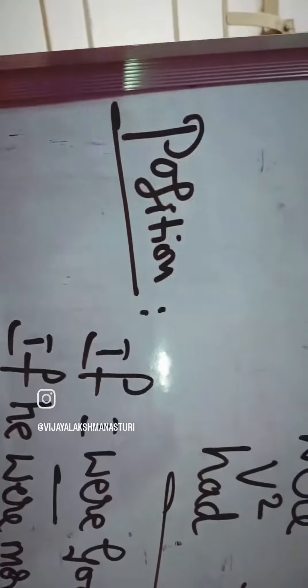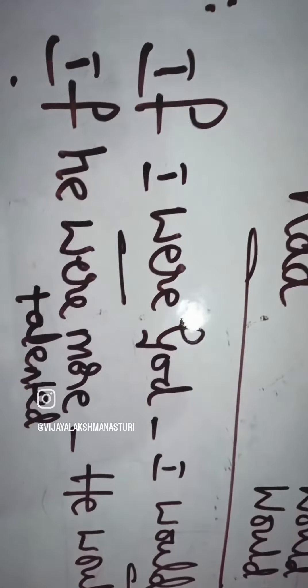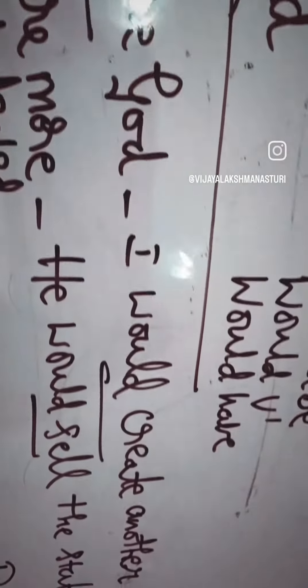Here are three themes. One is position, second one is action, and third one is possession. First one, position examples: If I were God, I would create another beautiful world.